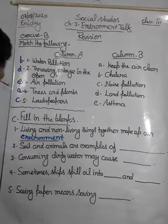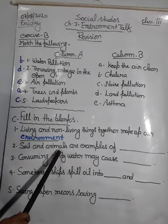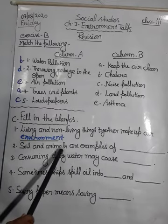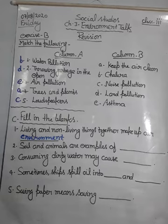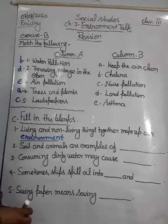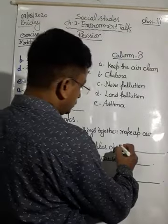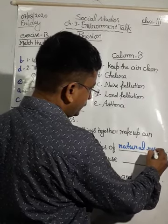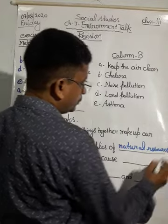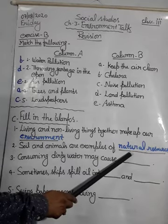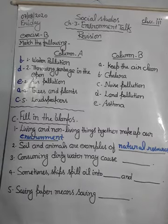And next: soil and animals are examples of blank. Soil and animals are both made by God, and we can say both are natural resources, because both are gifted by nature. That's why they are called natural resources.